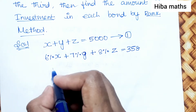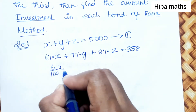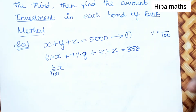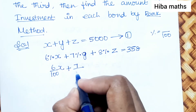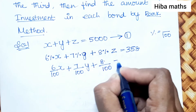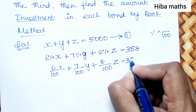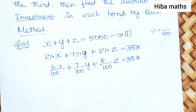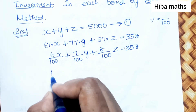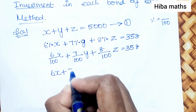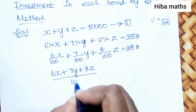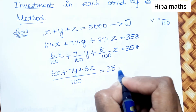Converting the percentages: 6 by 100 into X, plus 7 by 100 into Y, plus 8 by 100 into Z equals 358. Taking the common denominator of 100, we get 6X plus 7Y plus 8Z divided by 100 equals 358. Multiplying both sides by 100 gives us the second equation: 6X plus 7Y plus 8Z equals 35,800.